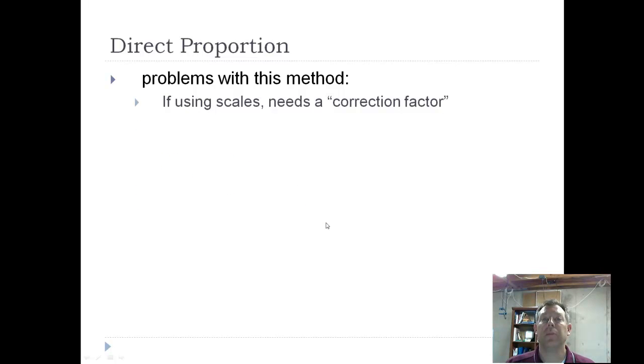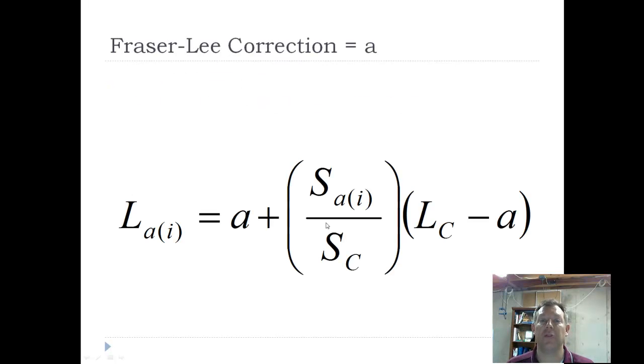Now, one problem with using this, if you're using scales, you need a correction factor. You can do this with otoliths and spines, and for those, the previous equation works fine. But with scales, you need a correction factor, which is called the Fraser-Lee correction, and it's symbolized by a lowercase a.